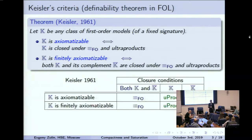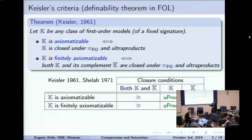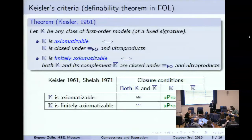We can summarize these two statements in a table. In each line we list those operations and relations under which the class should be closed. If we want to get rid of the linguistic relation of elementary equivalence, we can do this at the price of invoking the ultrapower in the remaining empty cell. This result was obtained by Keisler and improved by Shelah — Keisler used the generalized continuum hypothesis, and Shelah succeeded to avoid this.